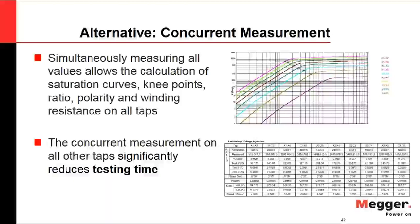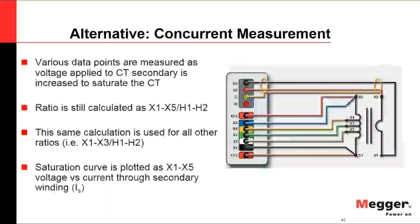During concurrent measurement, voltages are applied to the CT secondary and increased to saturate the CT. The ratio is calculated as the ratio of voltages between X1-X5 and H1-H2, and inter-winding ratios are calculated based on the voltage relationships between primary and secondary. The saturation curve is plotted between X1 and X5, and all inter-winding saturation curves are calculated and plotted simultaneously.